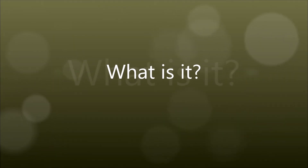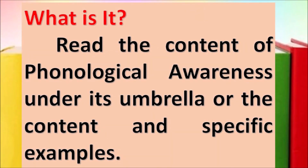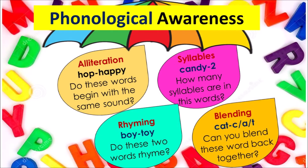What is it? Read the content of phonological awareness under its umbrella — the content and specific examples. Under phonological awareness are: alliteration, syllables, rhyming, and blending. Let's talk about alliteration — example: hop, happy. Do these words begin with the same sound? Next, syllables — candy. How many syllables are in this word? There are two. Rhyming — boy, toy. Do these two words rhyme? And blending — cat. Can you blend this word back together? Cat.